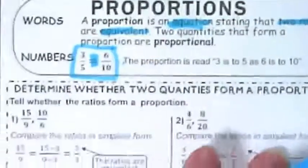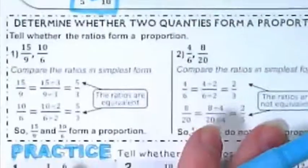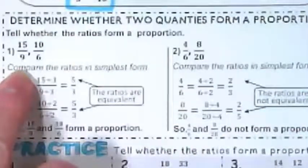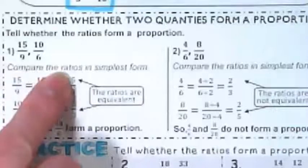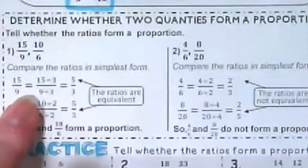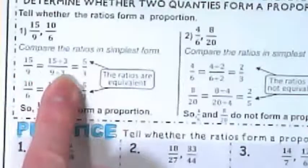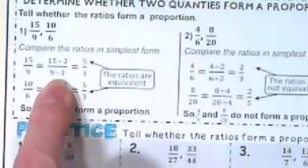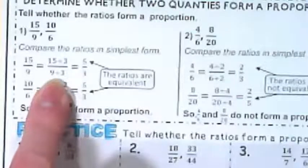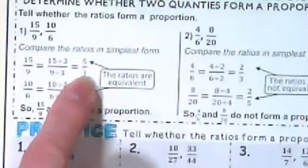So to determine whether two ratios form a proportion, we're going to do a couple of examples. The first example we're looking at is 15 to 9 and 10 to 6. We're going to compare the ratios in simplest form to see if they are a proportion. We have 15 over 9 and we've taken 15 and 9 and divided them by 3 because 3 is a common factor of both 15 and 9. And we end up with 5 over 3.